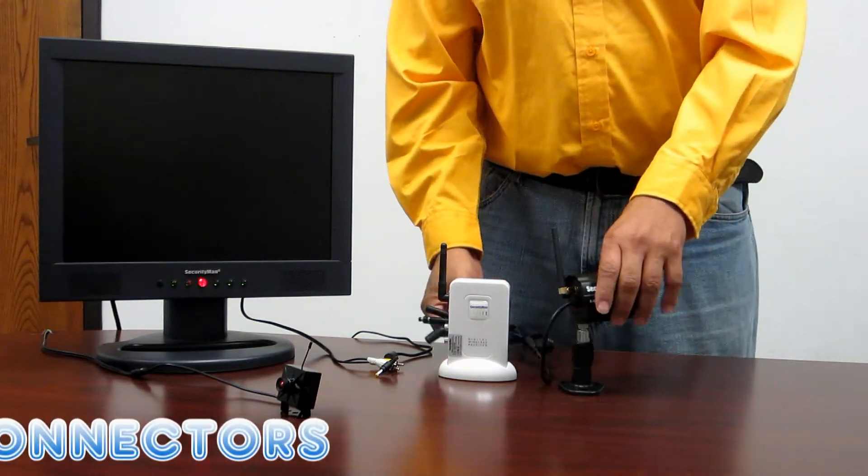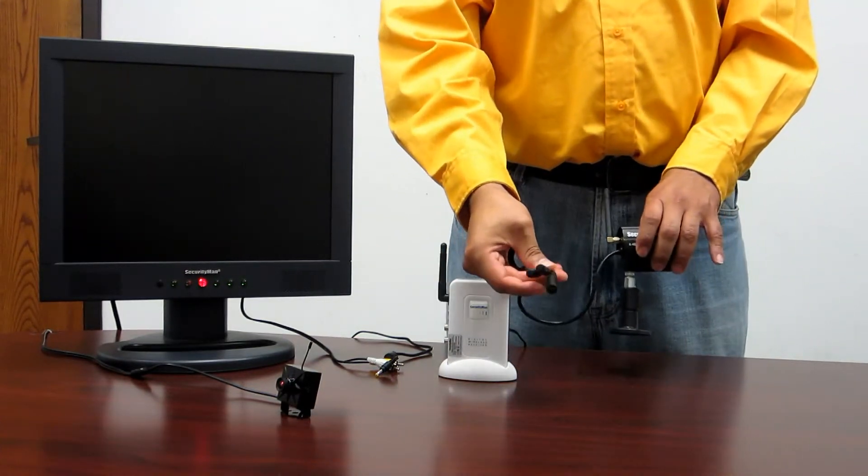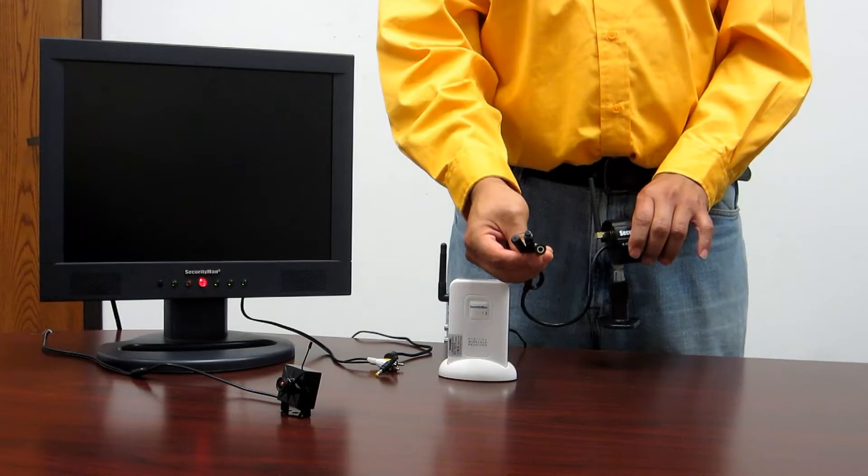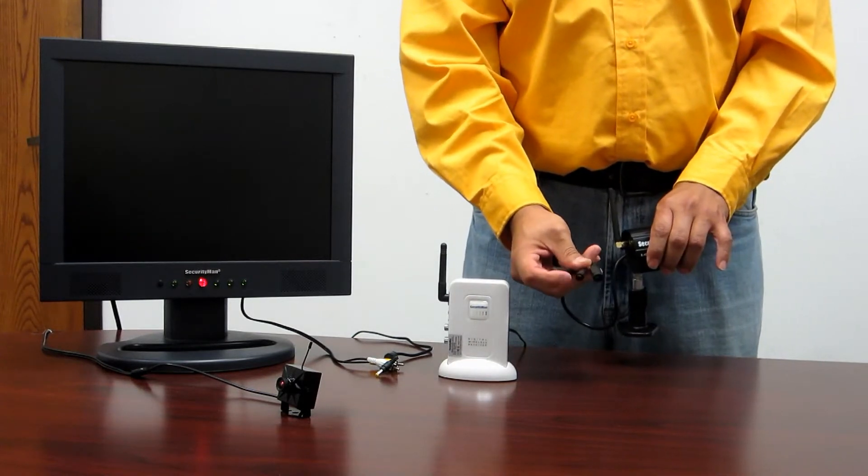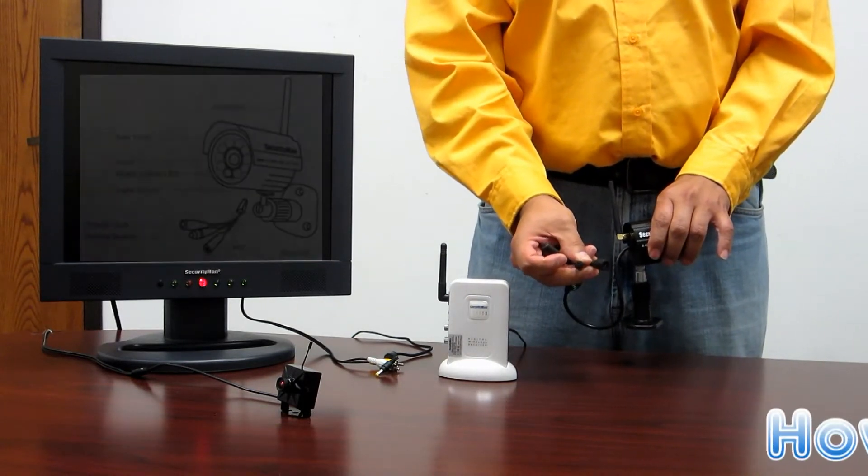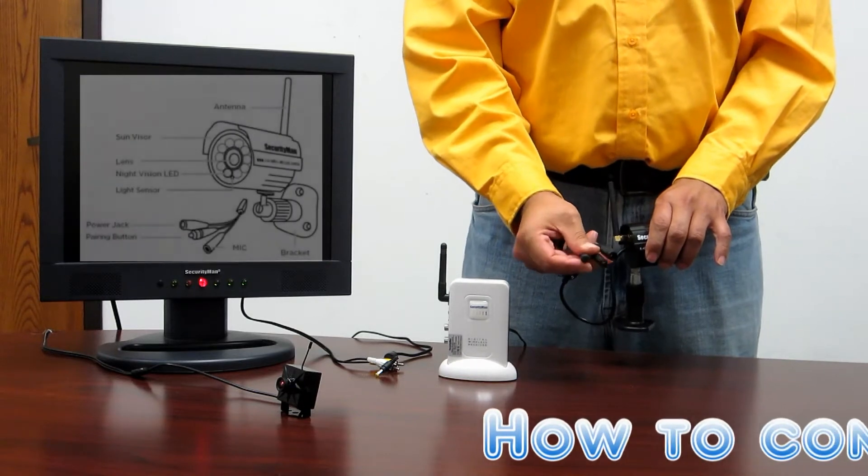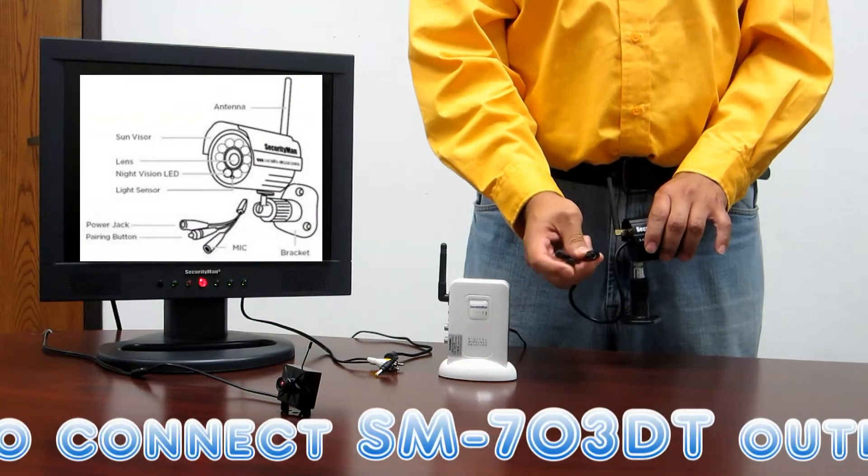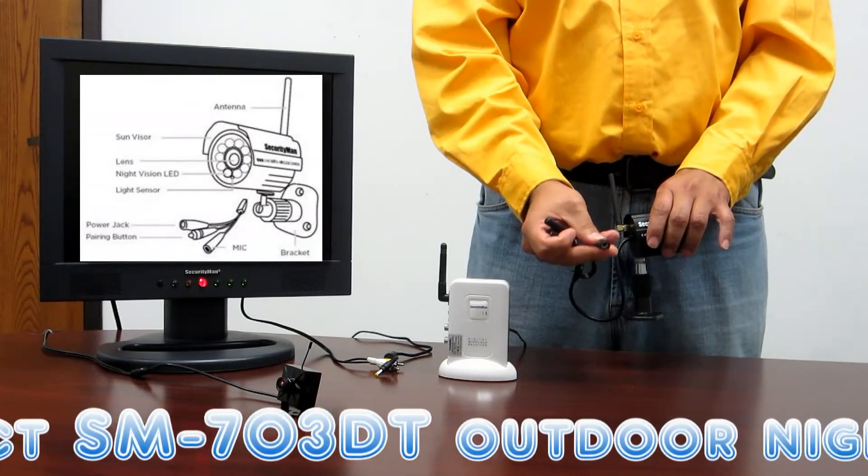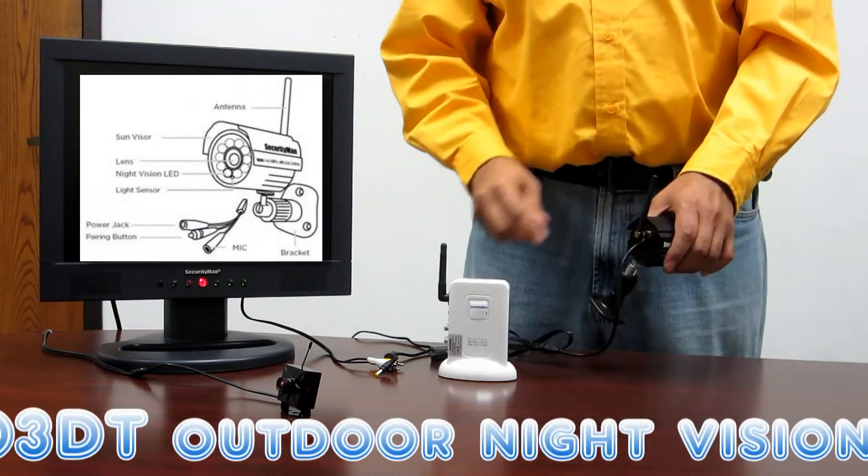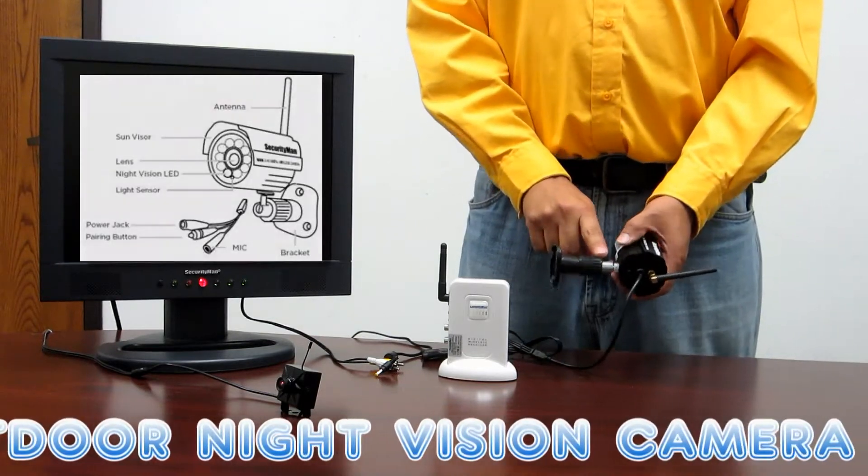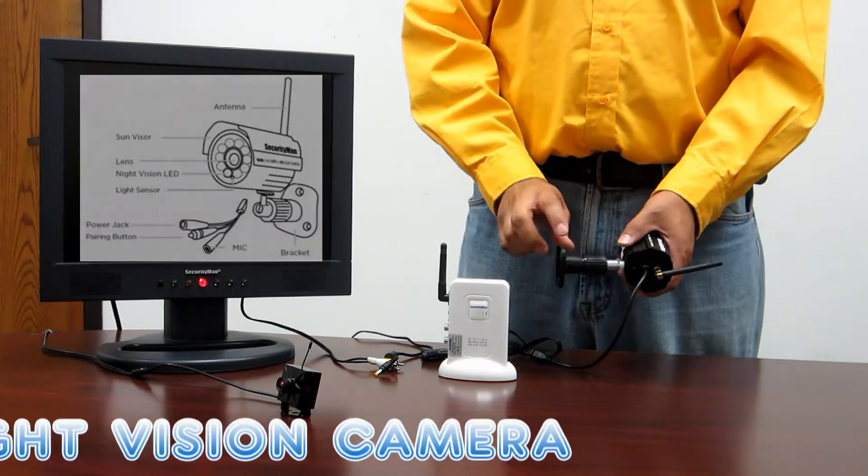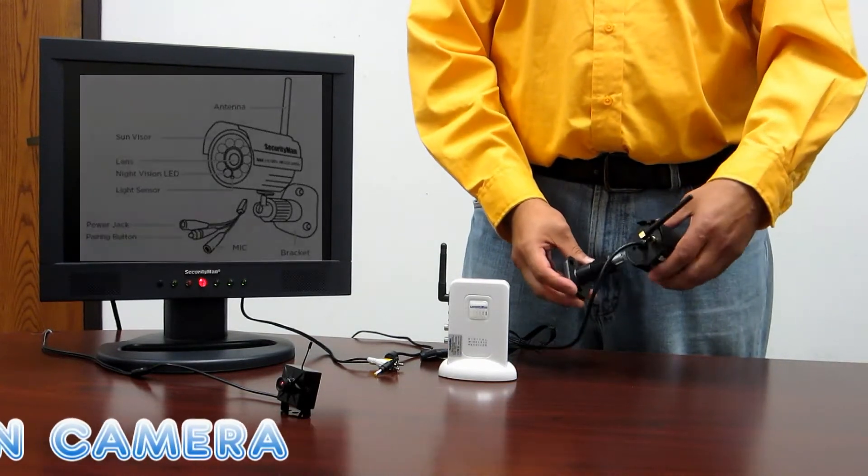On the DIGI OutAir camera there are three ends to the cable coming off the back of the camera. You've got your pairing button which is used to add cameras to your receiver, your microphone connection which is used to listen to audio, and your power socket which provides power to the camera itself. Both the antenna and the mounting bracket are already pre-assembled. All you have to do is tighten them up and mount your camera where you want it to go.